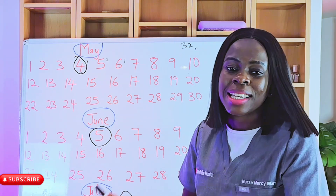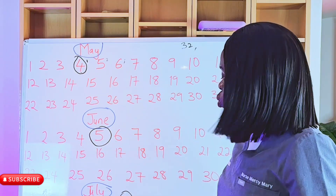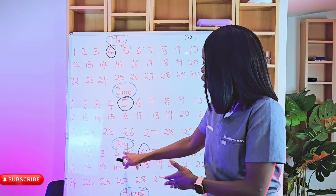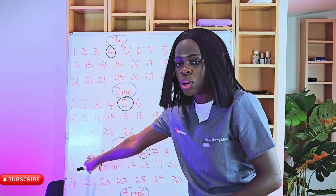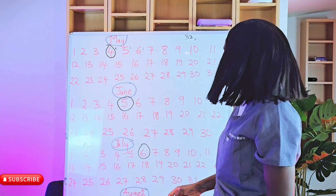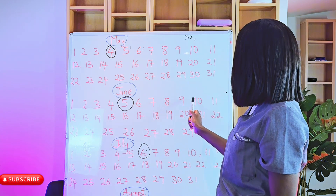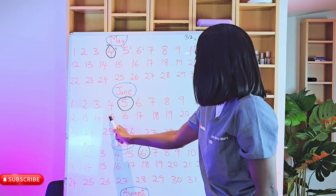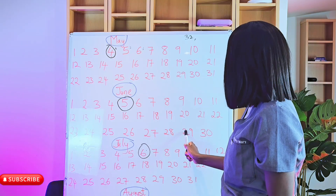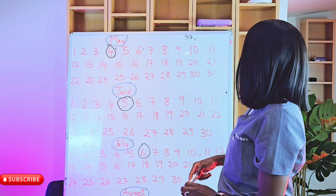So we're going to calculate to see if this cycle is regular. We're going to calculate now from June 5th — which is the beginning of another cycle — to a day before the next period. So even if in July your period started July 2nd, you calculate from June 5th to July 1st. Let's calculate from June 5th to July 5th: 1, 2, 3, 4, 5, 6, 7, 8, 9, 10, 11, 12, 13, 14, 15, 16, 17, 18, 19, 20, 21, 22, 23, 24, 25, 26, 27, 28, 29, 30, 31. So that's 31 days.